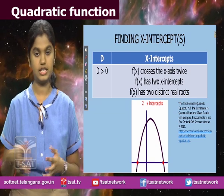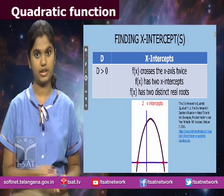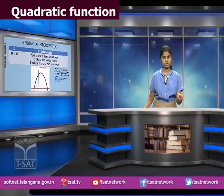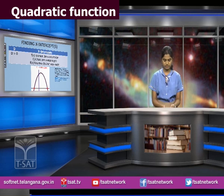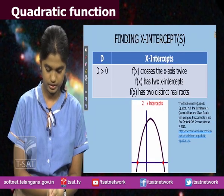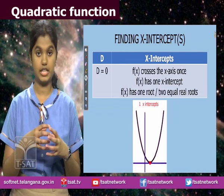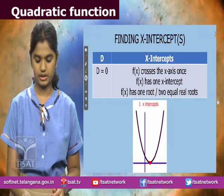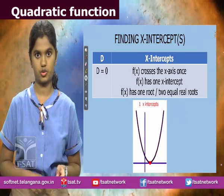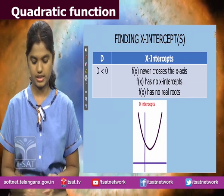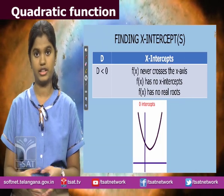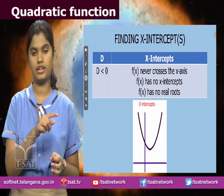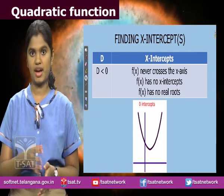If the discriminant is greater than 0, that means there are two x-intercepts — the quadratic function cuts the x-axis at two distinct points, giving two distinct roots. If the discriminant is equal to 0, that means it's a perfect square, so it only cuts at one point on the x-axis, meaning there are two equal roots. If the discriminant is less than 0, the function has no real solutions — it never cuts the x-axis — and the square root of b² − 4ac would be an imaginary number.